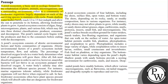Ponds are shallow water bodies that barely reach 12 to 15 feet in depth and allow the sun to penetrate to the bottom, allowing freshwater plants to grow. A pond ecosystem consists of algae, fungi, microorganisms, plants and various fish, which may fall into three distinct classifications: producer, consumer and decomposer. The pond's natural cycle begins with the producers, then the consumers, and ends with the decomposers.